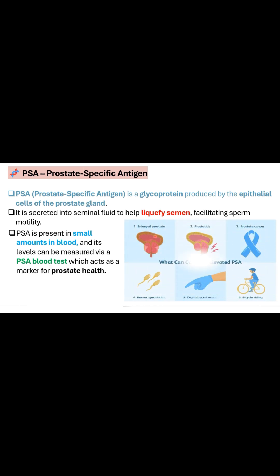PSA is increased in the following conditions: number one, enlarged prostate which is benign in nature, seen most commonly in elderly people; prostatitis, that is inflammation of the prostate; prostate cancer; and due to recent ejaculation, digital rectal examination, and bicycle riding.